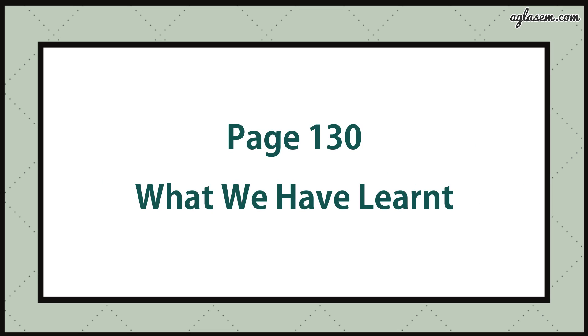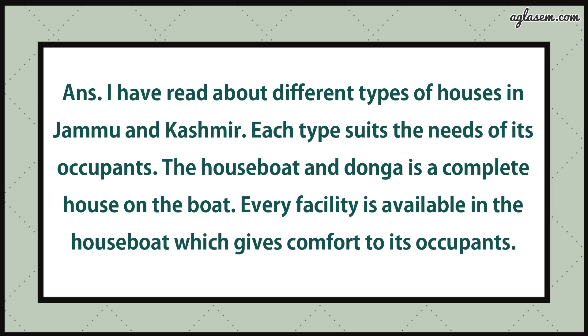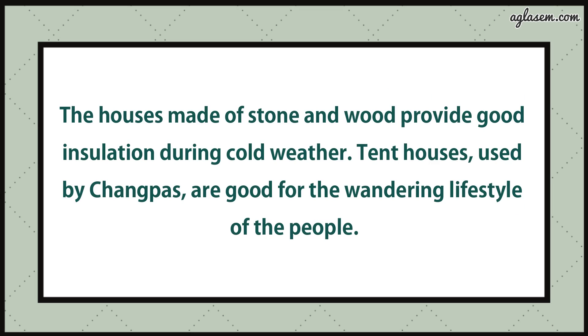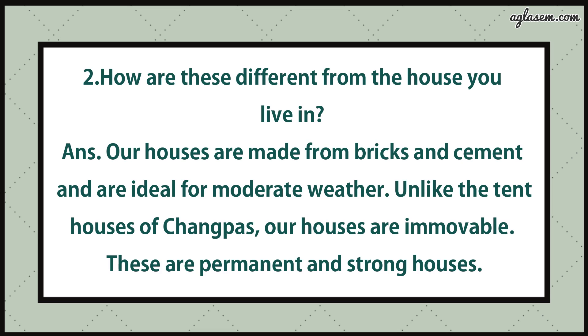Now turn to page number 130. Question number one says: describe how these shelters suit the needs of the people who live there. Answer: I have read about different types of houses in Jammu and Kashmir. Each type suits the needs of its occupants. The houseboat and donga is a complete house on the boat with every facility available. Houses made of stone and wood provide good insulation during cold weather. Tent houses used by Changpas are good for the wandering lifestyle of the people. Question number two: how are these different from the house you live in? Answer: Our houses are made from bricks and cement and are ideal for moderate weather; unlike the tent houses of Changpas, our houses are immovable, permanent, and strong.